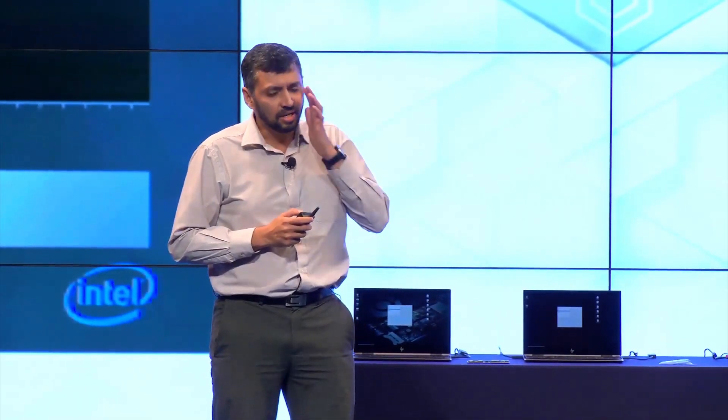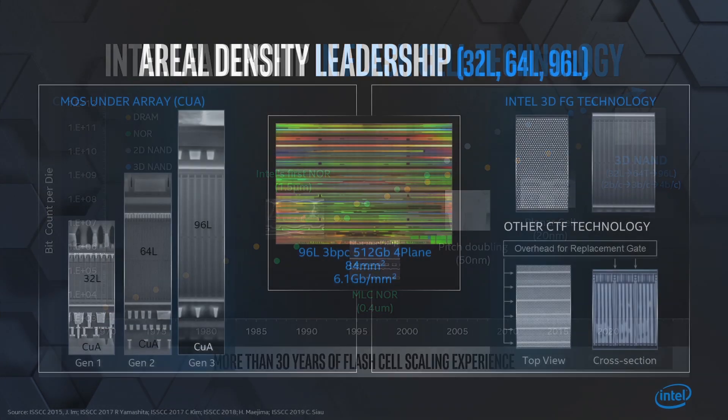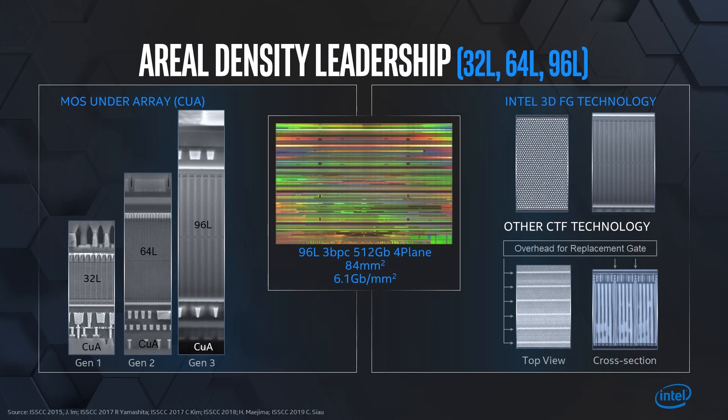Intel 3D NAND SSDs are based on a really long history of flash technology, and we were the leaders in terms of cell scaling as well as product innovations. What we deliver is aerial density leadership. Intel makes the densest NAND bar none. It's been true in the 32 layer, the 64 layer, and as well as in the 96 layer.